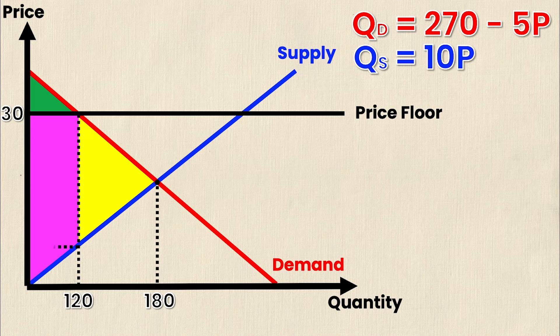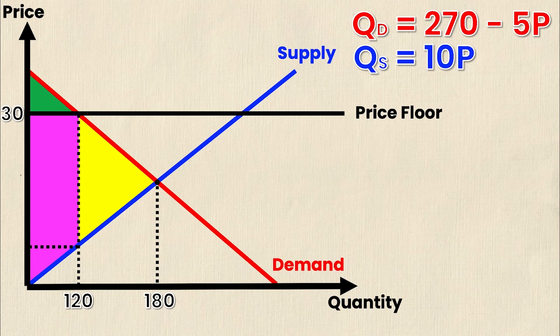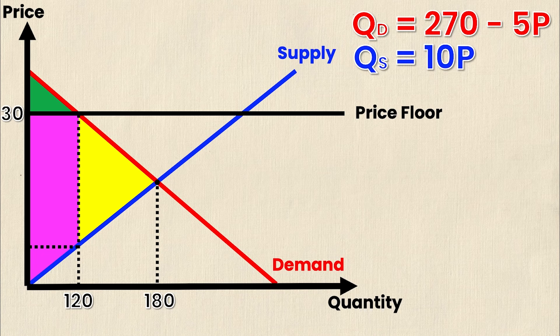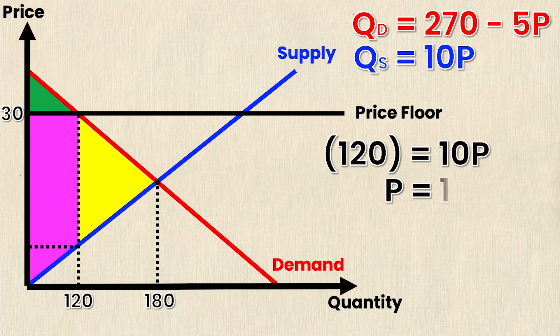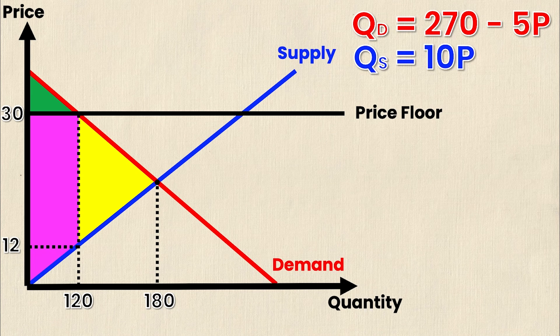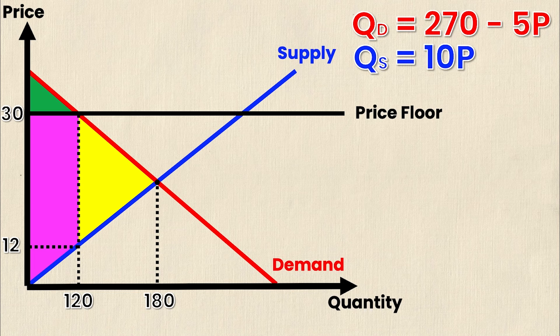But I still need to know that intersection point where the supply curve intersects with Q equals 120. To do that I'm going to sub the Q floor value into the supply equation and then solve for P. Upon doing that I get an equation which looks like 120 equals 10P. Isolating for P I get a P value of 12, and that P represents the corresponding price when the quantity supplied is equal to 120. So now I have all the values I need to calculate the area of that yellow triangle.